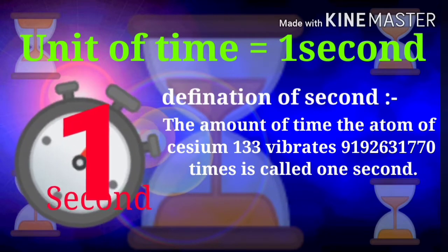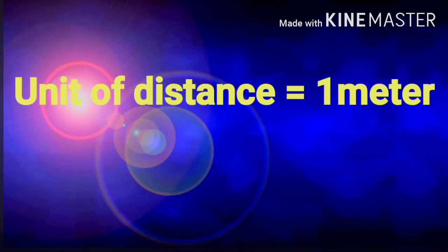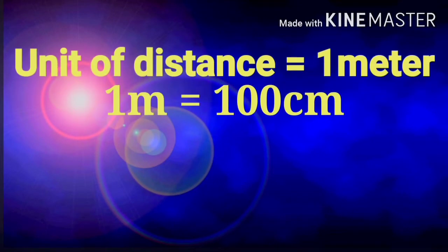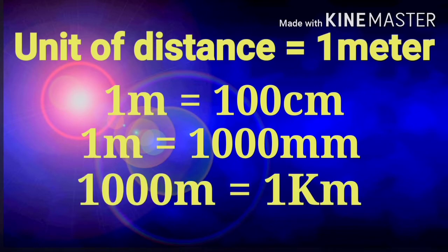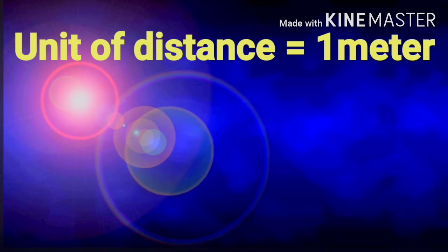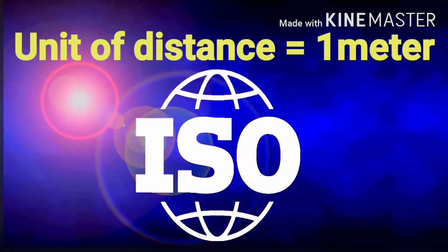The unit of distance is 1 meter. 1 meter contains 100 centimeters and 1000 millimeters. The distance in which 1 meter comes 1000 times is called 1 kilometer.